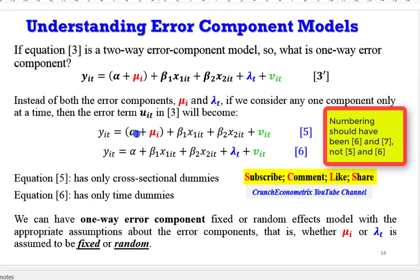What do I mean? Let's look at equation 5 and 6. In equation 5, you only have the component representing individual differences. And in equation 6, you only have the component representing time differences. Unlike equation 3 prime, where you have two of them, this representing individual differences, and this representing time differences. So, equation 3 prime is an example of a two-way error component, while equations 5 and 6 are examples of one-way error components.